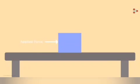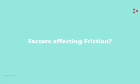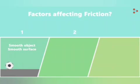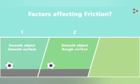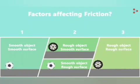Here's a cube placed on a table. If we push it in one direction, friction acts in the opposite direction. The force of friction always opposes the applied force. What are the factors that affect friction? Consider three situations: first, an object with a smooth surface moving on a smooth surface; second, a smooth object on a rough surface or vice versa; third, both the object's surface and the table's surface are rough. In which situation is the force of friction highest?